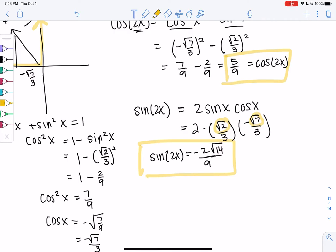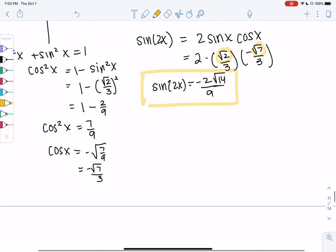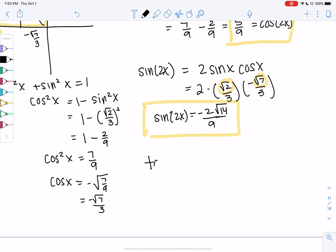And then tangent, we could use this crazy formula, or we could just do sine over cosine. So tangent of 2x will be sine of 2x over cosine of 2x. So oftentimes you have more than one choice of formulas, so the hardest part is just picking which one to use. So sometimes we'll make the wrong choice. It happens.